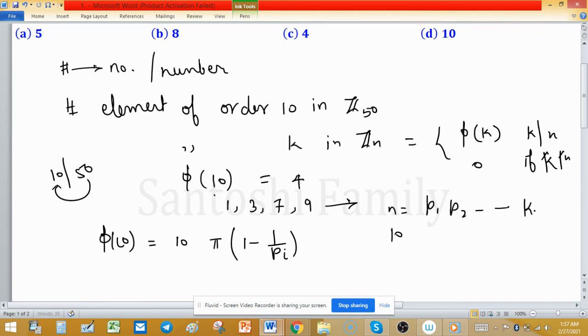They are raised to the power k1, k2, and so on kr. 10 can be easily written as 2 times 5, means power 1 and 1. This is 10 times the product of (1 minus 1/2) times (1 minus 1/5).